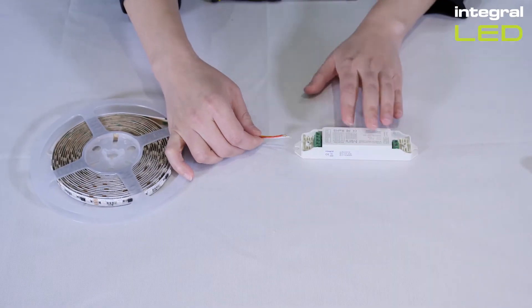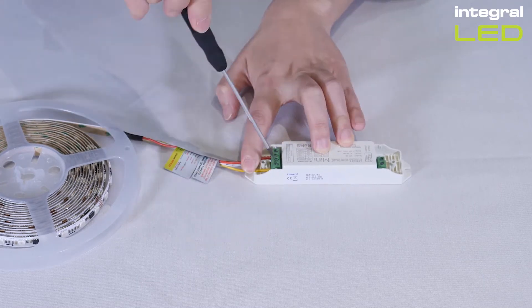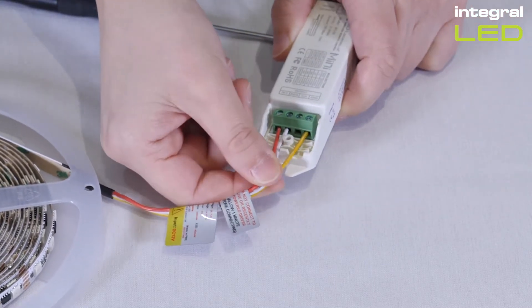Insert each wire into the correct terminal connection and screw tightly. Give the wires a gentle tug to make sure they are securely connected to the receiver.